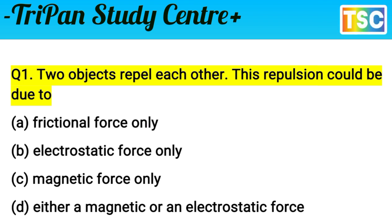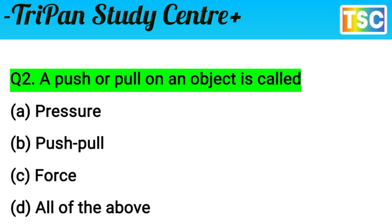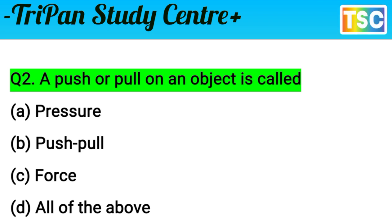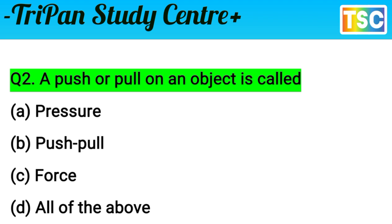Next question: a push or pull on an object is called — A) pressure, B) push-pull, C) force, D) all of the above. The answer is clear: pressure is not correct here, and push-pull is not the term. A push or pull on an object is called force. Option C is correct.